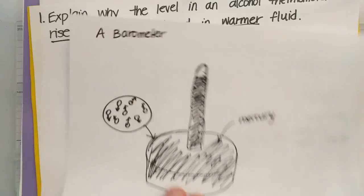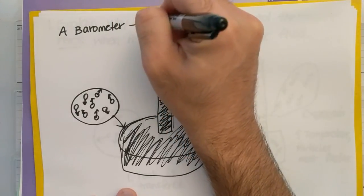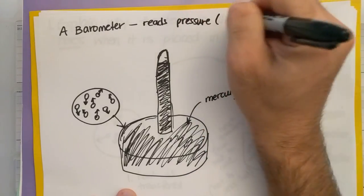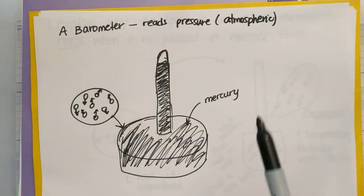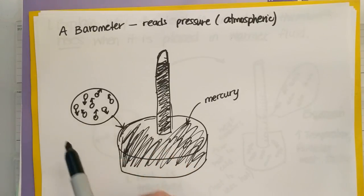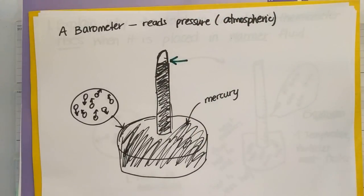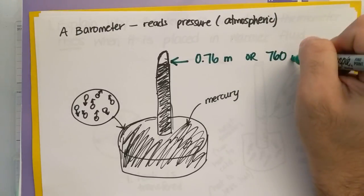Another question is how a barometer works. A barometer is an instrument that reads pressure — typically atmospheric pressure. I drew a quick sketch of mercury in a barometer with mercury particles, open to the air, and mercury in a tube. The mercury in the tube stops at a certain height. Do you remember what atmospheric pressure is approximately? What our scientists discovered: this height should be about 0.76 meters, or 760 millimeters of mercury. That's typical atmospheric pressure.